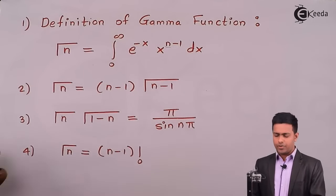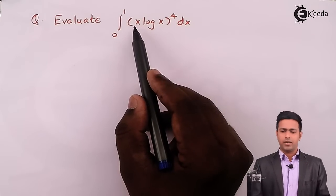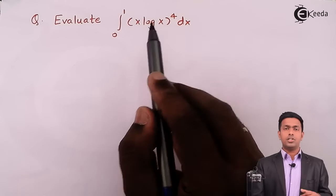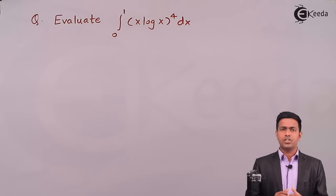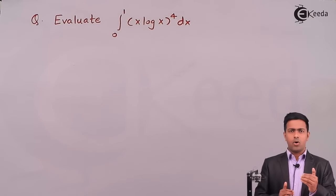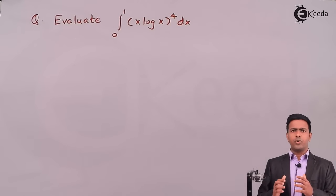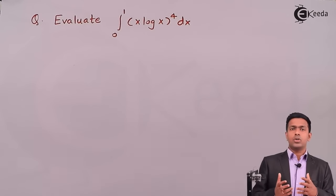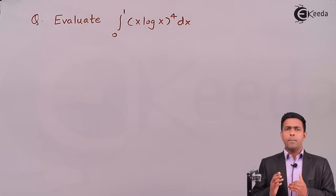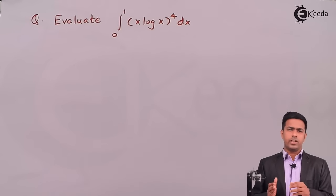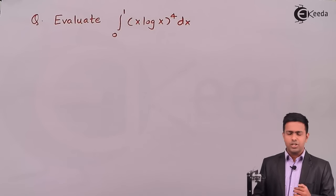In our case we have one algebraic term x raised to 4 and one logarithmic term log(x) raised to 4, but as per gamma function we want one term as exponential. I would like to show you the general form of such questions so you can compare any question with that general form and get the answer by simple observation.